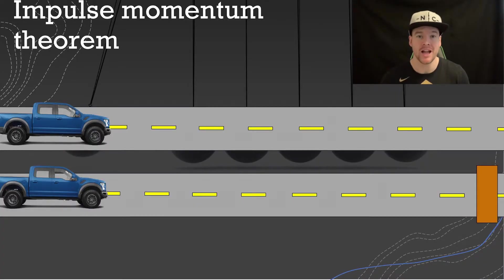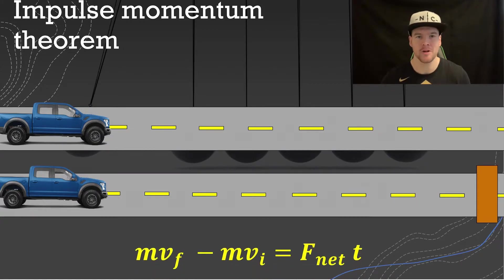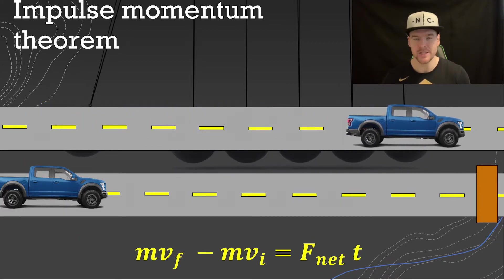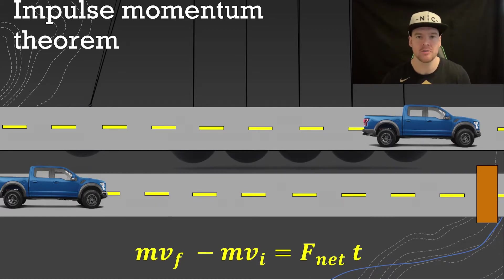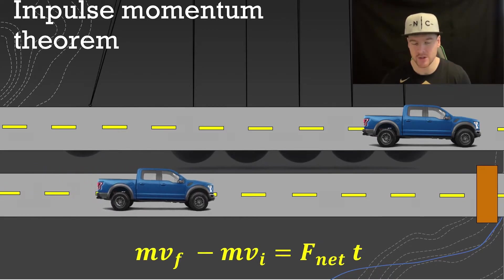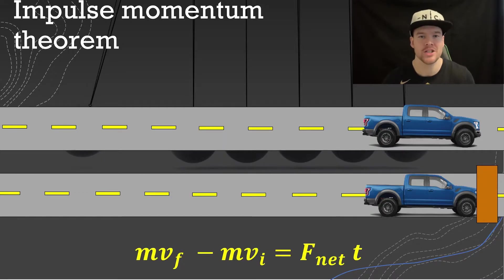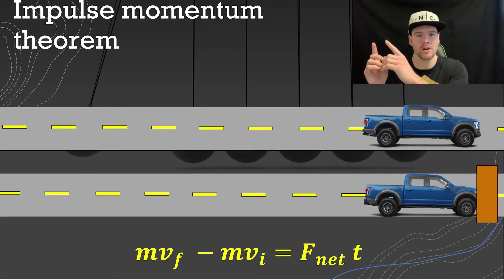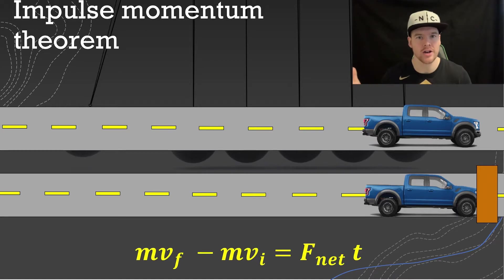Let's apply the impulse-momentum theorem to vehicles traveling at 100 kilometers per hour coming to a stop. The first applies brakes, slowly stops — maybe for a red light. Nothing really significant. The second vehicle is going at 100 kilometers per hour and crashes into a wall, immediately coming to a stop. That's much worse. But if we consider the change in momentum, they're actually identical — same vehicle, same speed, same final stop. Their change in momentum was exactly the same.